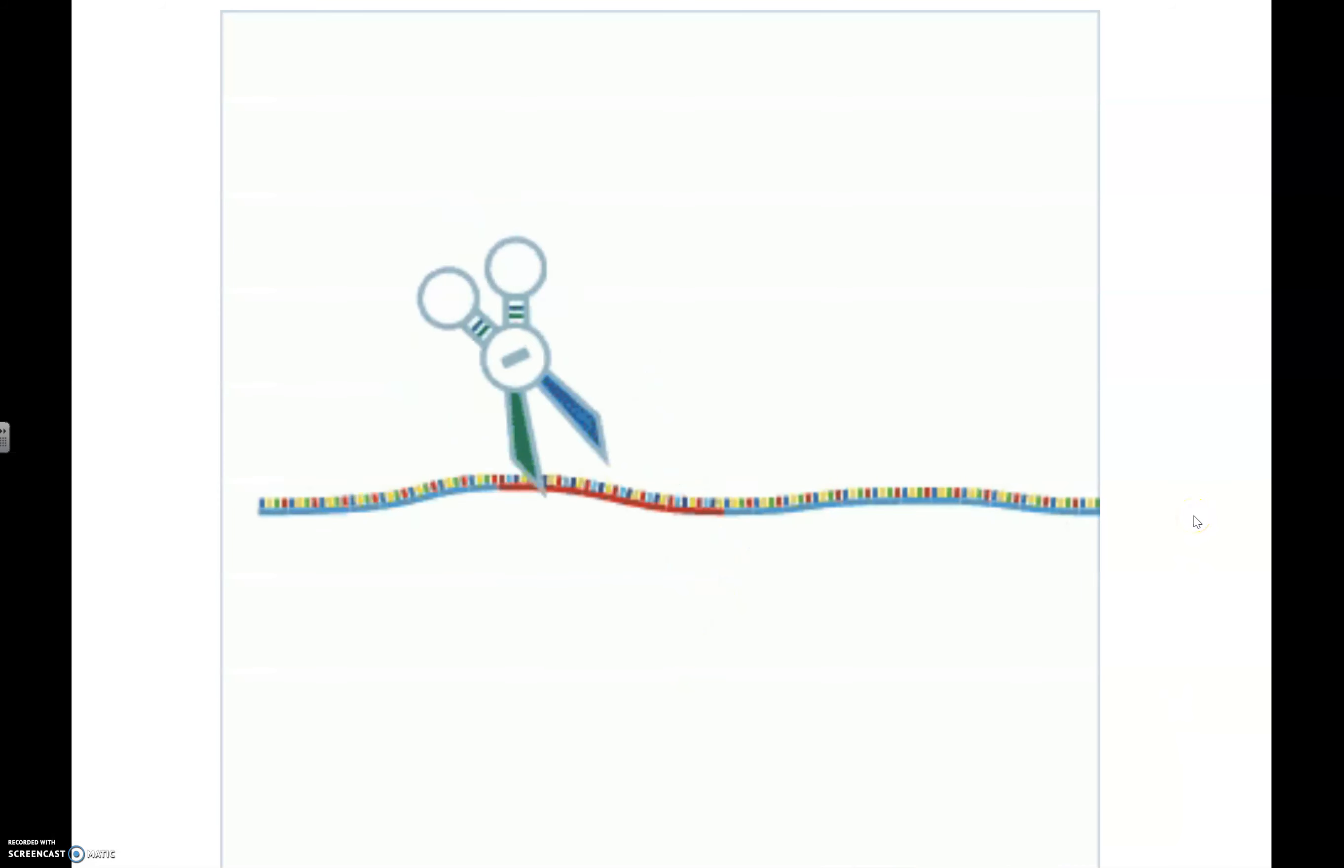I like this image because the scissors are representing the spliceosome, and basically all it's doing is cutting out the intron and then merging the two exons together. In this diagram, the red is the intron region and the blue are the exons.